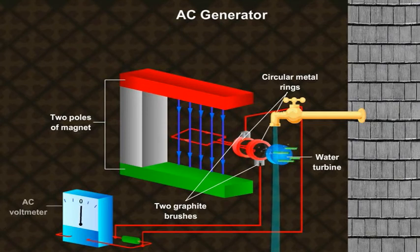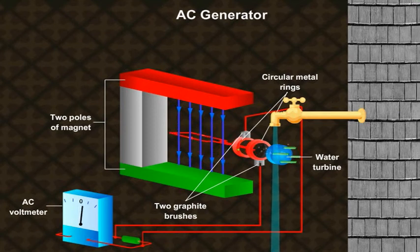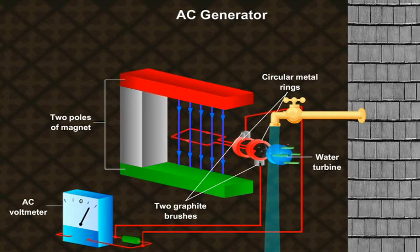What do we see? The AC voltmeter shows deflection on both sides. The deflection is more when the rotation rate of the turbine is more.